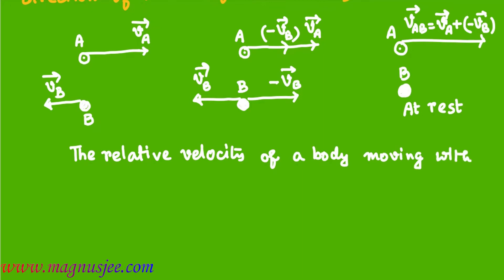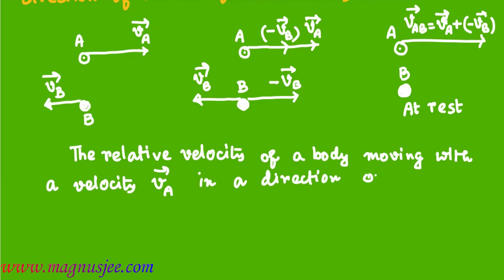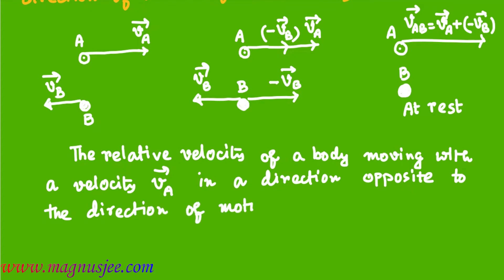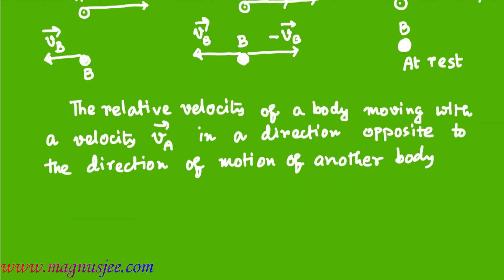The relative velocity of body A, moving with velocity vector vA in a direction opposite to the direction of motion of another body B, which has velocity vector vB towards left.